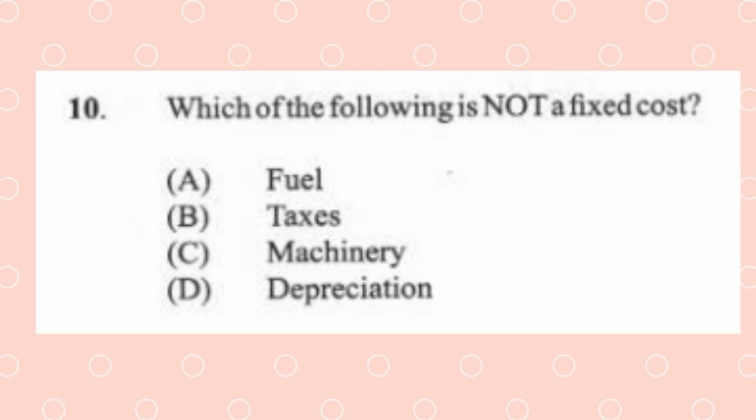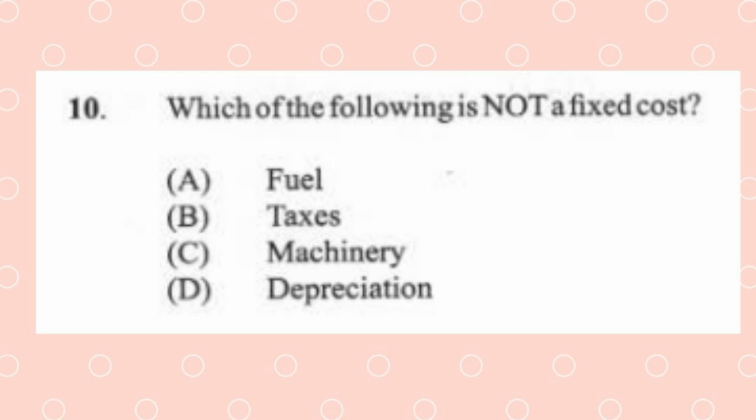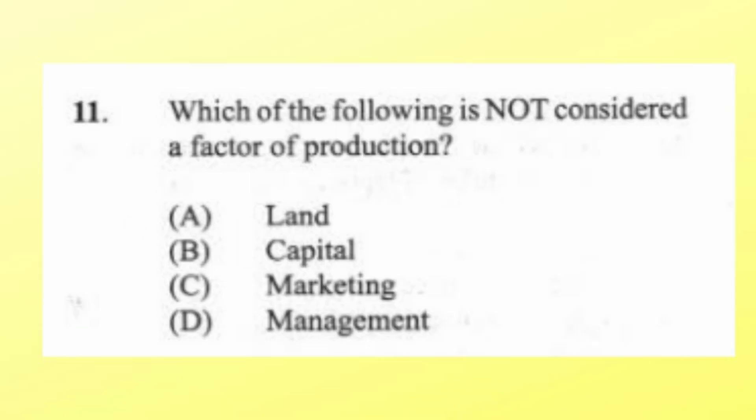Question 10: Which of the following is not a fixed cost? (a) fuel, (b) taxes, (c) machinery, (d) depreciation. The answer is A, fuel. A fixed cost is a cost that does not change with the level of production, or that item is not converted into the production process.